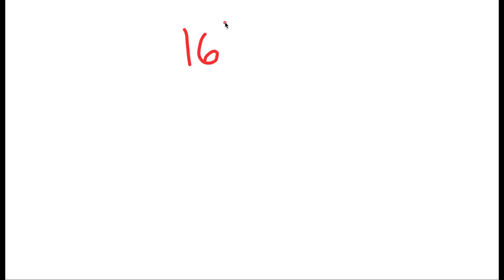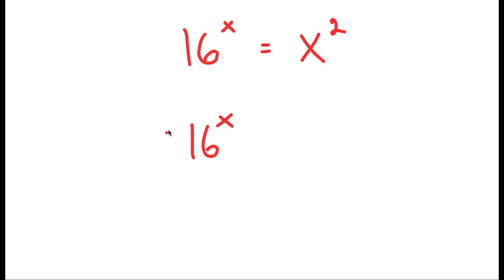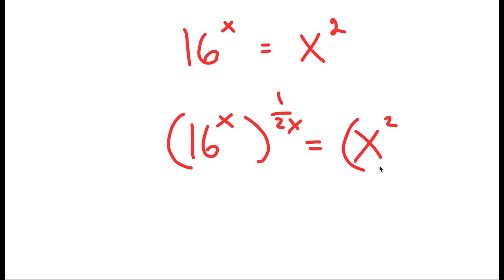In this video, I'm going to solve the equation 16 to the power of x is equal to x to the power of 2. To solve this, I'm going to start by taking the power of 1 over 2x on both sides. So I get 16 to the power of x, to the power of 1 over 2x, is equal to x to the power of 2, to the power of 1 over 2x.